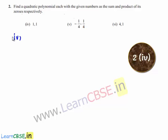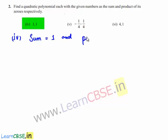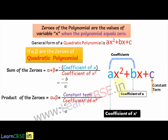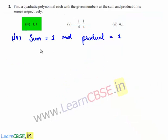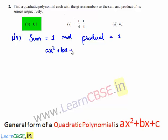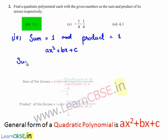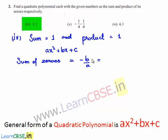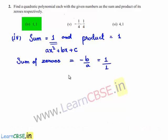Coming to the fourth bit, the sum of the zeros given to us is 1 and the product of zeros is also equal to 1. So, let the quadratic polynomial be Ax² + Bx + C. We know that sum of the zeros is equal to minus B by A, and the given sum of zeros is 1, so this can be written as 1 by 1. By comparing, we can say that B is equal to minus 1 and A is equal to 1.